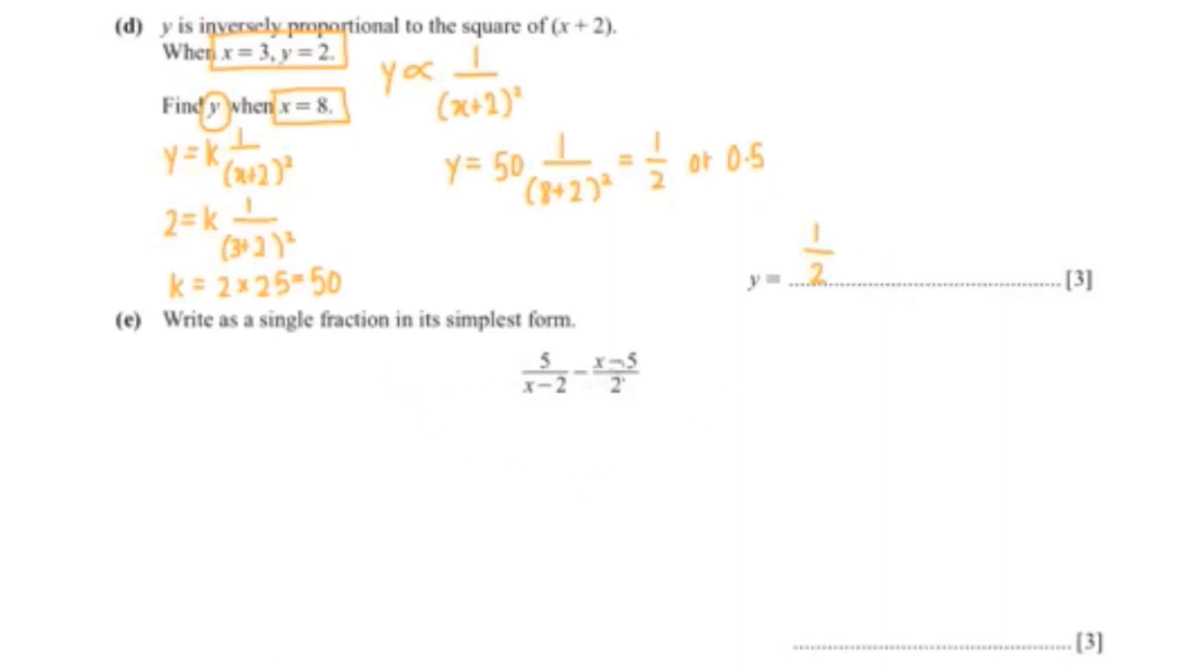Now our last question wants us to write this as a single fraction. First, I'm going to make the denominator the same. I'm going to multiply this one with x minus 2. That would give me 10 over 2x minus 4, minus x squared minus 7x plus 10, over 2x minus 4.